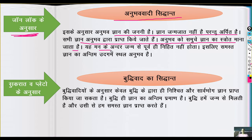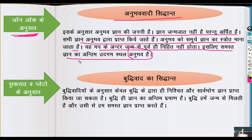This means that the definition of knowledge according to this theory is that knowledge comes from material experience. The second theory is called Shuddhan, or the rationalist approach.